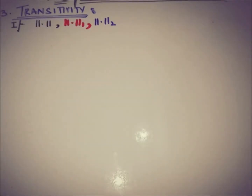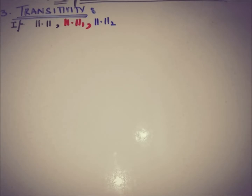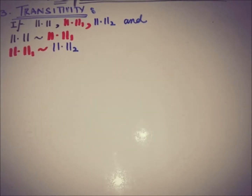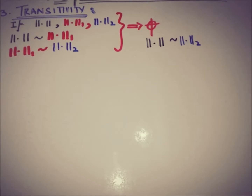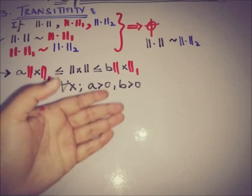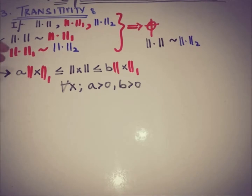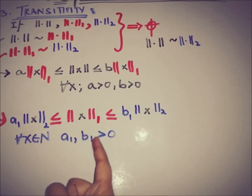Transitivity states: if we have three norms on normed space N — norm, norm 1, and norm 2 — and norm is equivalent to norm 1, and norm 1 is equivalent to norm 2, then we will show that norm is equivalent to norm 2. Given norm ~ norm 1: a·‖x‖₁ ≤ ‖x‖ ≤ b·‖x‖₁, where a, b > 0 for all x in N. Given norm 1 ~ norm 2: a₁·‖x‖₂ ≤ ‖x‖₁ ≤ b₁·‖x‖₂, where a₁, b₁ > 0 for all x in N.